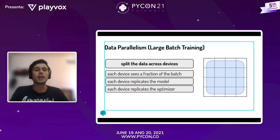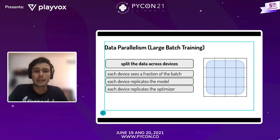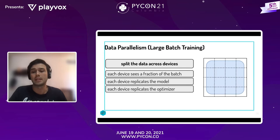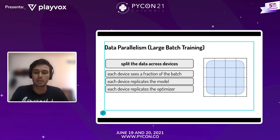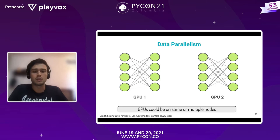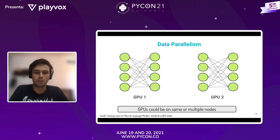Ahora voy a hablar de la principal estrategia de esta charla, que se llama el paralelismo por datos. La idea es repartir los datos en diferentes dispositivos, pero todos los dispositivos van a tener una réplica completa del modelo. Si tengo cuatro GPUs, cada GPU va a tener todo el modelo. Además de las réplicas del modelo, también debemos replicar objetos como el optimizador. Estas GPUs pueden estar en una sola máquina o en múltiples nodos.